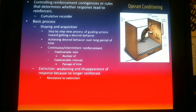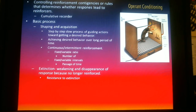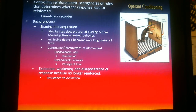Basically, every single time the rat pushes the lever I give it a food pellet. Eventually the rat won't want to push the lever because it's tired of eating or no longer cares about the food pellet. If instead I vary it — make the rat push three times to get food, then six times, then maybe twelve times — the rat becomes more engaged with pushing the lever. That is a much stronger type of reinforcement, known as variable ratio.